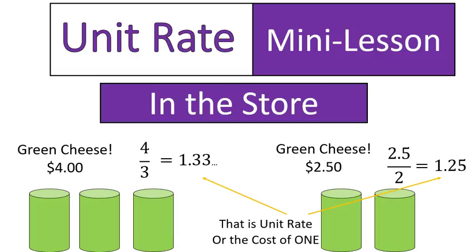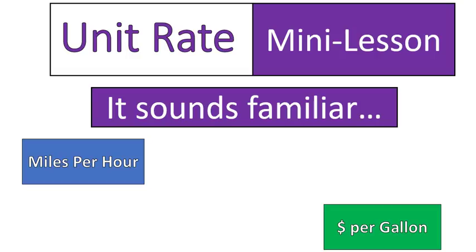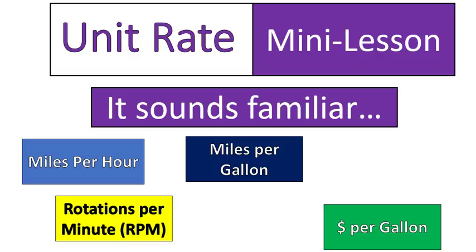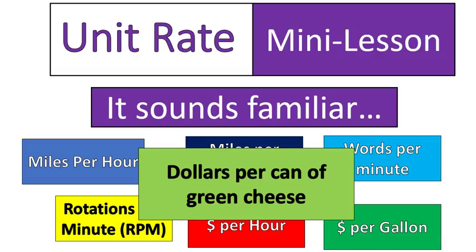That is the cost of one can of green cheese. If you buy it in a four-pack, you're paying approximately $1.33 per can. If you buy it in a two-pack, you're paying $1.25 per can. This is a practical skill you might have seen in a grocery store. It may also sound familiar because of this one word repeated in these examples: miles per hour, dollars per gallon, rotations per minute, miles per gallon, words per minute, and dollars per hour. The word 'per' is in there every time — telling you how many of one thing you're getting per one of another. For example, how many dollars per one can of green cheese? That's what a unit rate is. It's giving you an amount that you can compare different things.